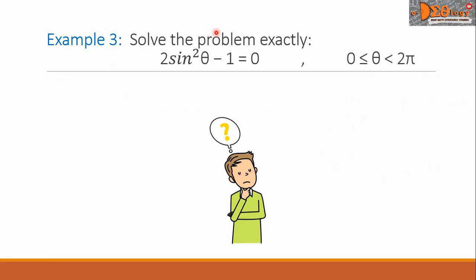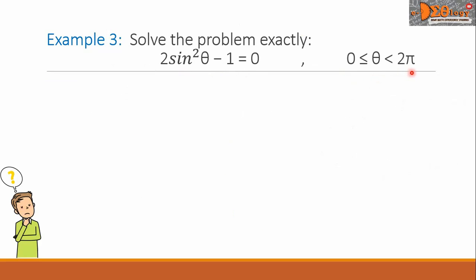Example 3. Solve the problem exactly: 2sin²θ - 1 = 0, where θ is from 0 to 2π. First we use algebra to isolate sin θ. Then we will find the angles.